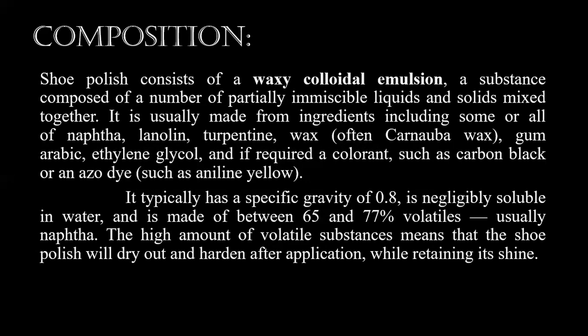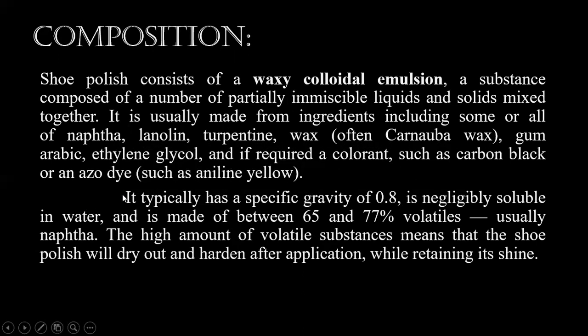Turpentine is a fluid obtained by the distillation of resin harvested from living trees, mainly pines. Wax is included from different natural and synthetic sources. Gum arabic is a substance formed from two sub-Saharan species of the acacia tree, commonly used to increase the viscosity of the product. Ethylene glycol is also a hydrocarbon component. If required — that is, if we are not making a neutral shoe polish — a colorant such as carbon black or an azo dye is added.